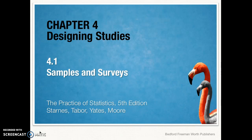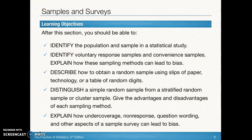The first topic is section 4.1: samples and surveys. After this section we should be able to figure out within a study which is the population and which is the sample. We want to talk about ways that data shouldn't be produced — namely voluntary response and convenient samples — and how data can be generated using random samples, simple random samples, and other types such as stratified and cluster sampling. We'll also discuss under coverage, non-response, question wording, and other forms of bias.